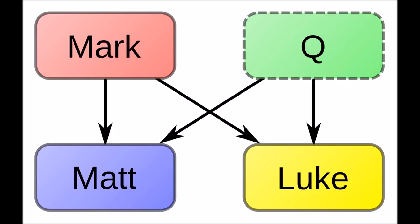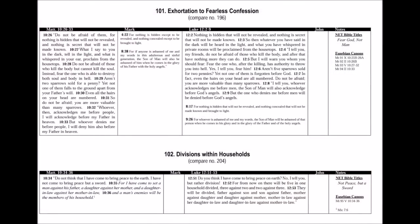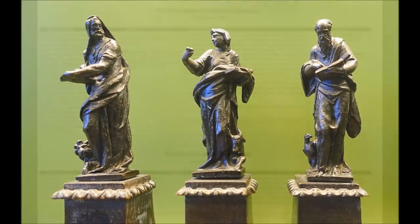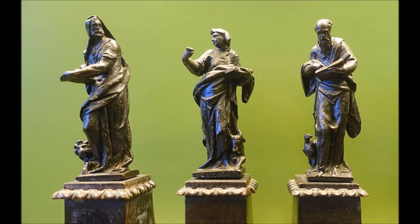Q falls within the remit of the synoptic problem. A synopsis in New Testament studies is a table where each of the four Gospels have their own columns, and the rows are arranged so that entries in the four Gospels that discuss the same things appear in the same row, so they can be read together and compared. A cursory glance at such a synopsis explains why the Gospels of Matthew, Mark and Luke are known as the Synoptic Gospels, and John is separate. The Synoptic Gospels share many pericopes, and these appear often in very similar or even identical wording.